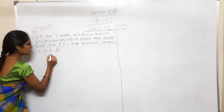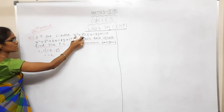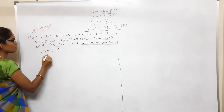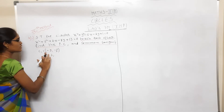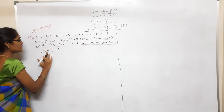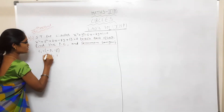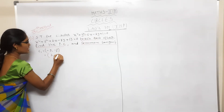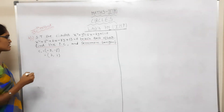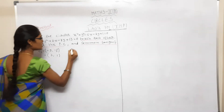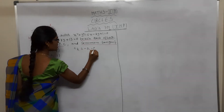For the first circle, f = −1, so minus f = 1. Therefore center C1 = (3, 1). For the second circle C2, using the same center formula (−g, −f), we find the center of the second circle.